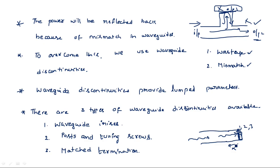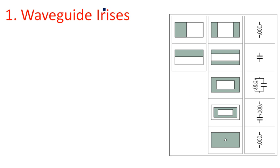The first one is waveguide irises. A waveguide iris is nothing but a window-like structure formed on either side of the waveguide, or the top, or the bottom, or surrounding the entire waveguide. See here — this is the rectangular waveguide having a window shape on one end and the other end. Or the same iris material can be formed on only one end — left end or right end — or on the top or bottom of the waveguide.